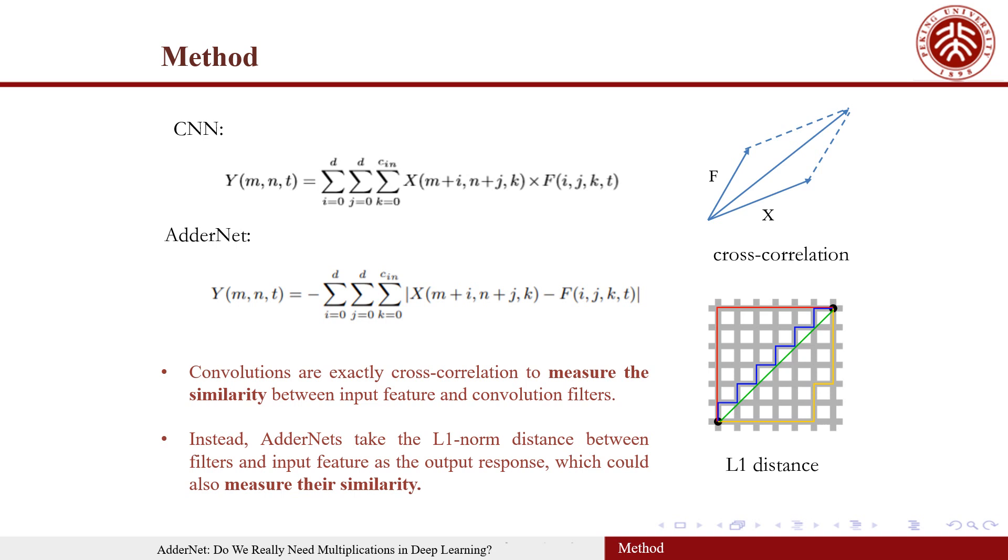In this paper, we propose the AdderNet, which takes the L1 norm distance between filter and input feature as the output response, which could also measure their similarity. Therefore, the massive multiplications in networks are replaced with additions.